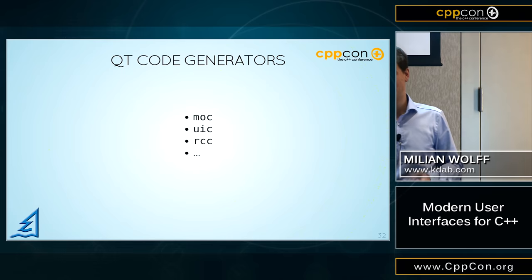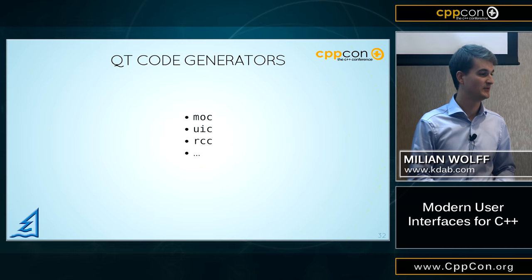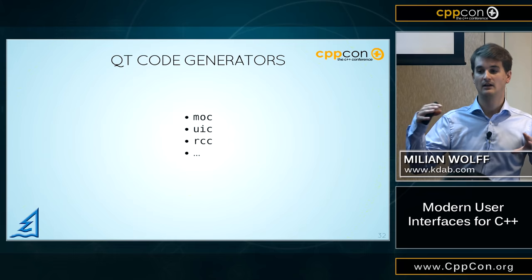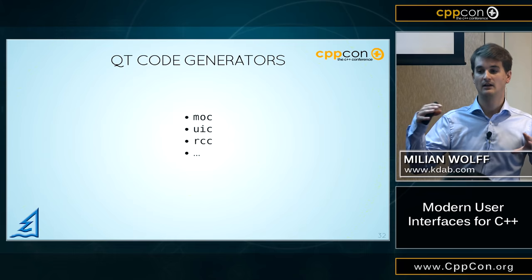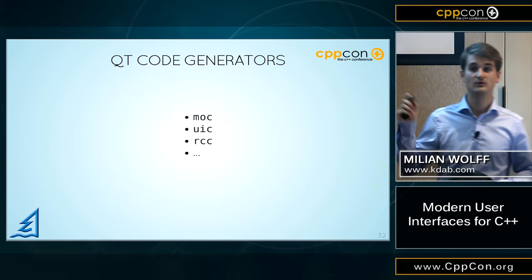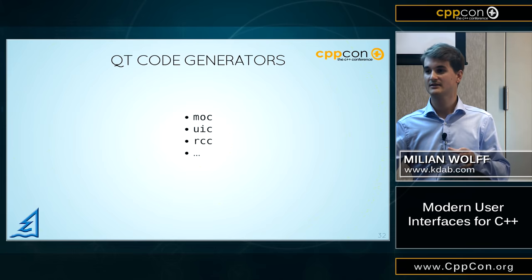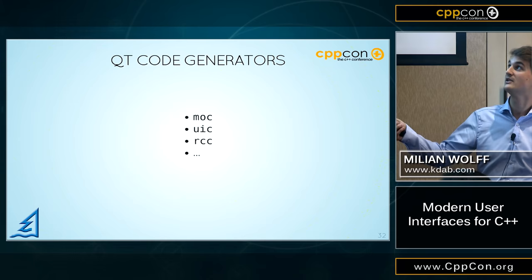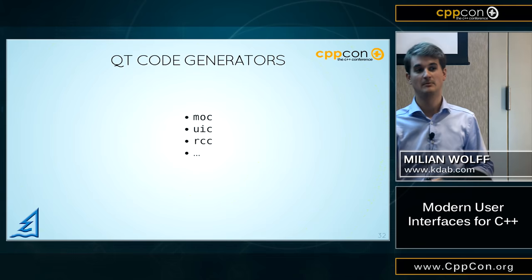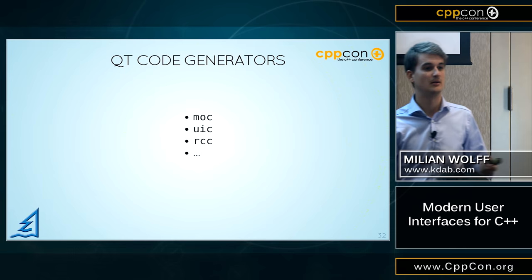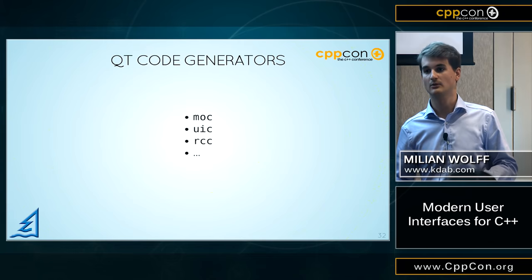Let's start off with code generators. People keep complaining about MOC, the meta-object compiler. People even decide to fork an ancient version of Qt to replace MOC for some reason. The thing is, MOC is just one of many code generators being used in Qt. The others are the UI compiler — for generating dialog layouts — and the resource compiler. Both of them are never going to be replaced by C++ code. The resource compiler takes image files, compresses them if needed, and puts them as binary data directly into your executable, making it super simple to deploy your code anywhere.